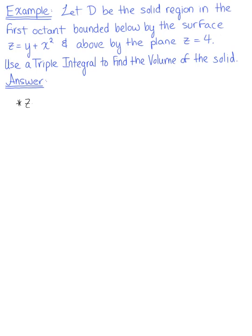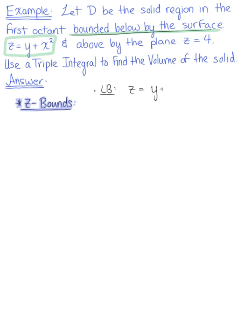Let's begin by thinking about the z bounds. The solid is bounded below by the surface z equals y plus x squared, so that's the lower bound on z. It is bounded above by the plane z equals 4, so that's the upper bound. Therefore, z is greater than or equal to y plus x squared and less than or equal to 4.